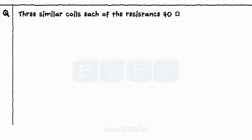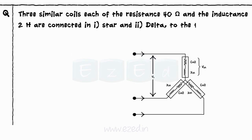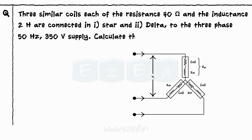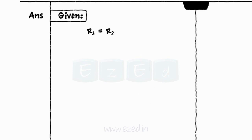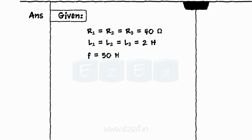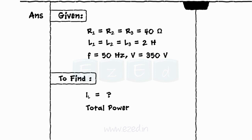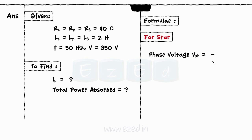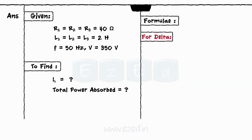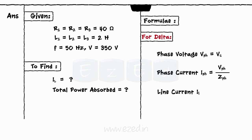Three similar coils each of resistance 40 ohms and inductance 2 henry are connected in star and delta to a three-phase, 50 Hz, 350 volt supply. Calculate the line current and total power absorbed. We have R1 = R2 = R3 = 40 ohms, L1 = L2 = L3 = 2 henry, f = 50 Hz, and applied voltage = 350 volts. We need to find the line current and total power absorbed in both star and delta connections.